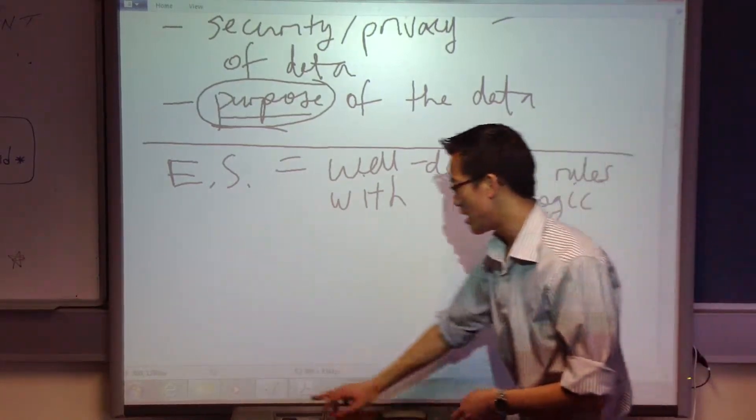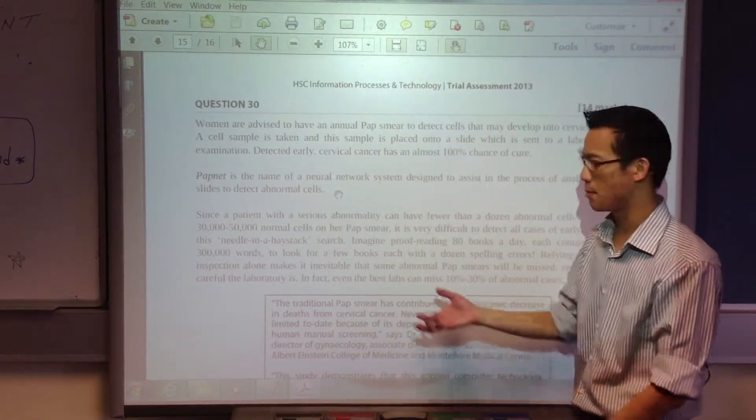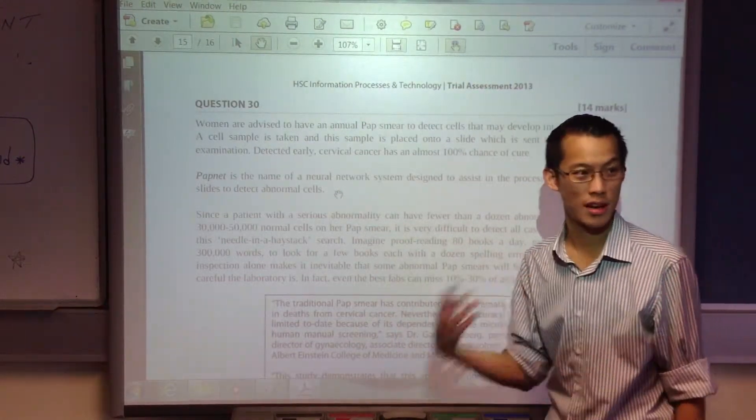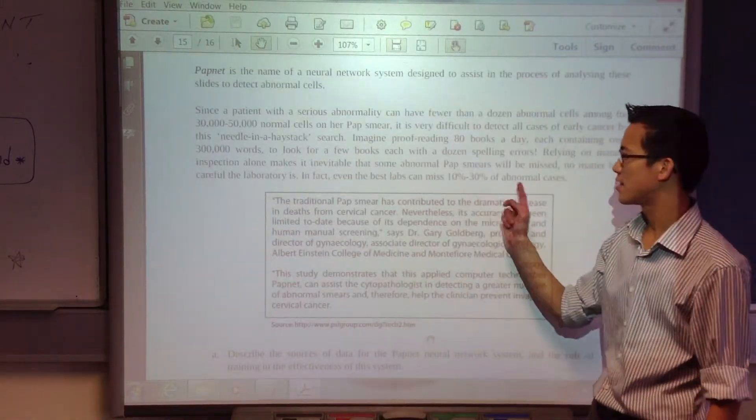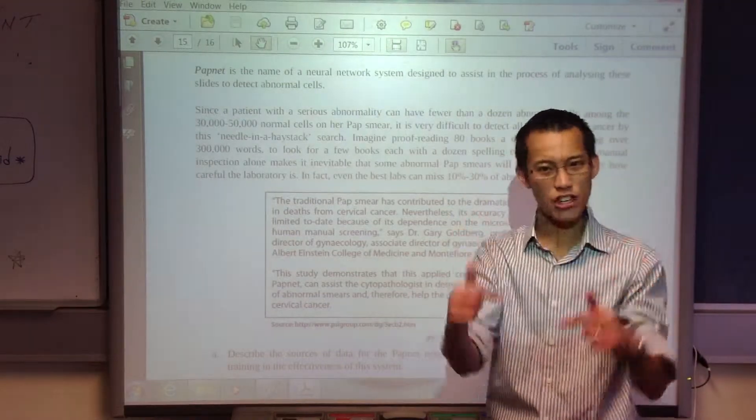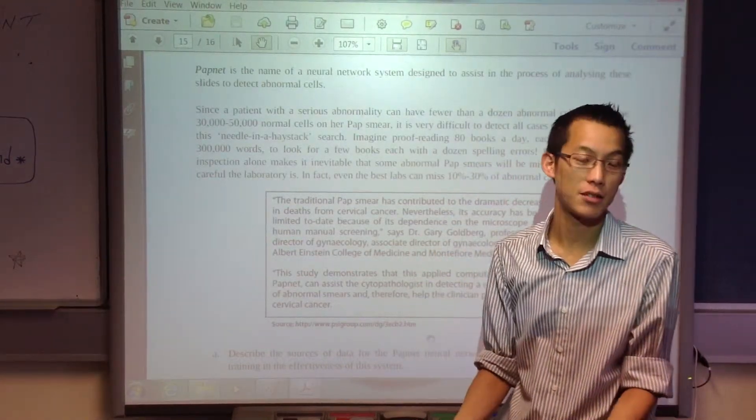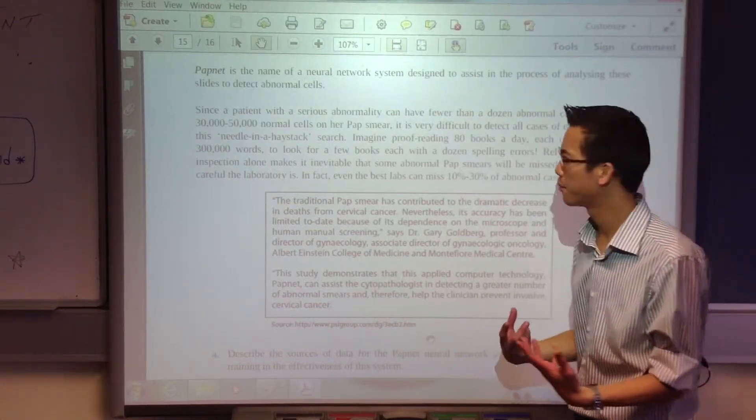But you can see from reading this, there's a lot of intuition involved and experience involved in being able to determine what's a nasty slide and what's not. It's so tricky that you can see they miss a lot of them. It's not really simple, like you just go through the checklist, and if it meets these criteria, yes, it has precancerous cells. It's more complex than that. It's more nuanced than that.